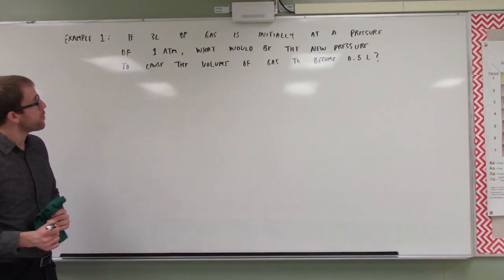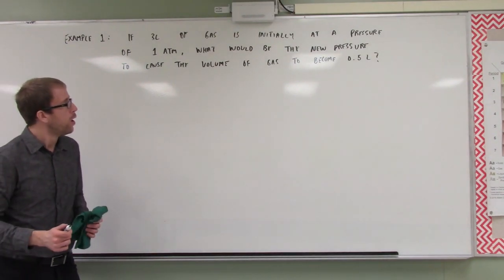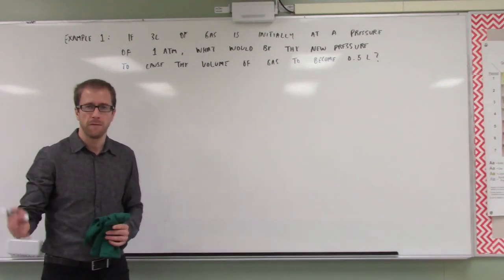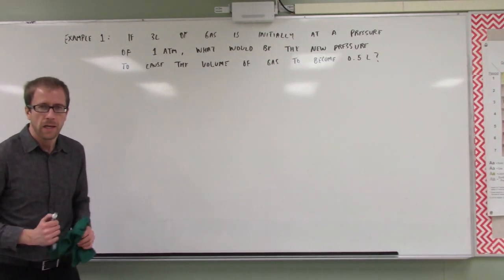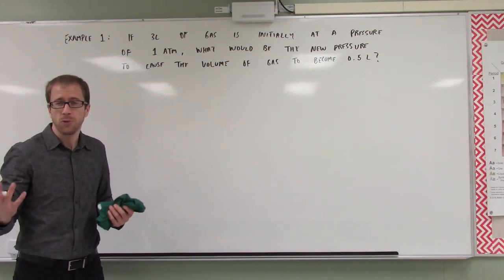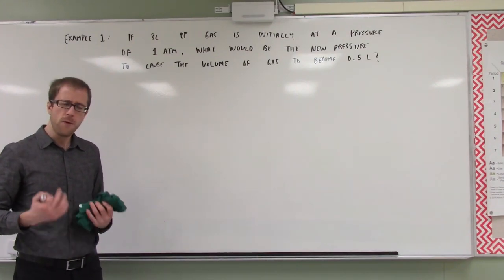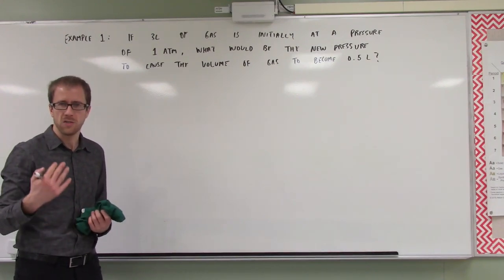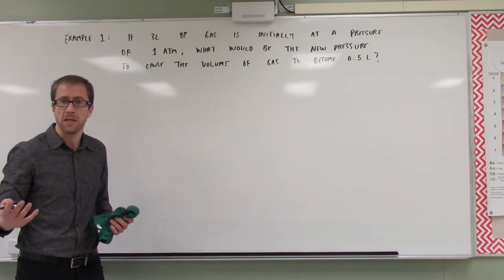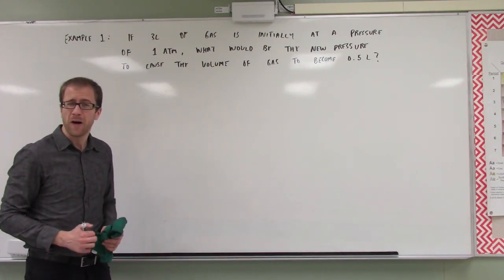The problem reads: if three liters of a gas is initially at a pressure of one atmosphere, what would be the new pressure to cause the volume of a gas to become 0.5 liters? I'm going to show you a strategy I want you to use. There is a formula for all of these different gas laws, but this is going to be a great opportunity to practice ratio thinking.